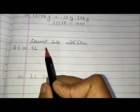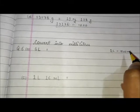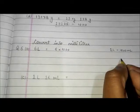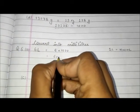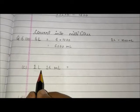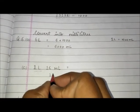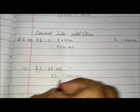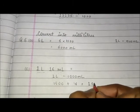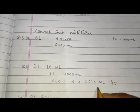In question number 6, convert into milliliters. One liter equals 1000 milliliters, so we multiply by 1000. For 6 liters, it will be 6000 milliliters. Next, 1 liter 16 milliliters — 1 liter equals 1000 milliliters, and then we add 16 milliliters, so it will be 1016 milliliters. We convert everything to milliliters.